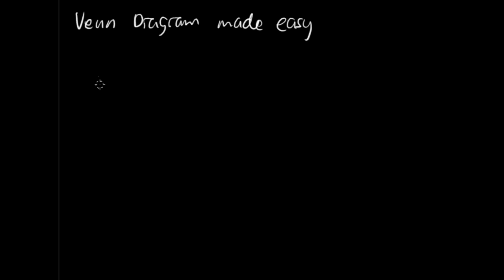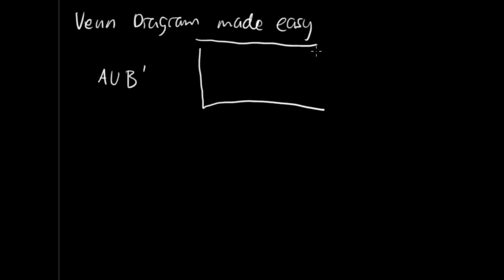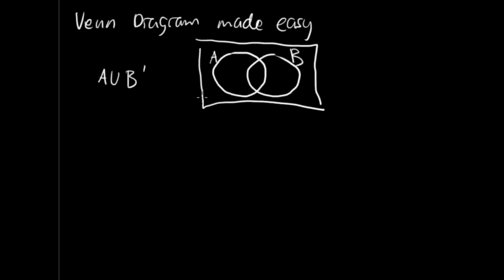Let's say I have the set A union B prime. This is a set that a lot of students have trouble identifying on the Venn diagram. The idea is just like shading, but instead of shading we're going to check. Here's our A and B. When we have a union we're going to take everything that has one check, and when we have an intersection we're going to take only the thing that has two checks.